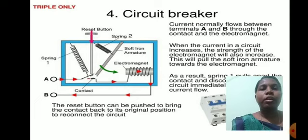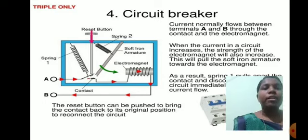Then, circuit breaker. Current normally flows between terminals A and B through the contact and the electromagnet. When the current in the circuit increases, the strength of the electromagnet will also increase. This pulls the armature towards the electromagnet and disconnects the circuit immediately. The reset button can be pushed to bring the contact back to its original position to reconnect the circuit.